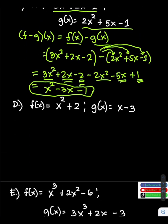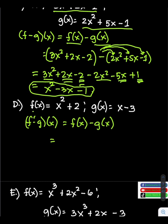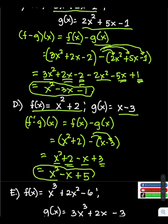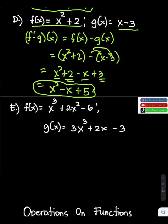Next example: f minus g times x equals f of x minus g of x. The value of f of x is x squared plus 2, subtract the value of g of x which is x minus 3. Copy the first term, then distribute the negative sign: negative x, and positive 3. Combine like terms: x squared stays, negative x stays, and positive 2 plus positive 3 is positive 5. The final answer is x squared minus x plus 5.